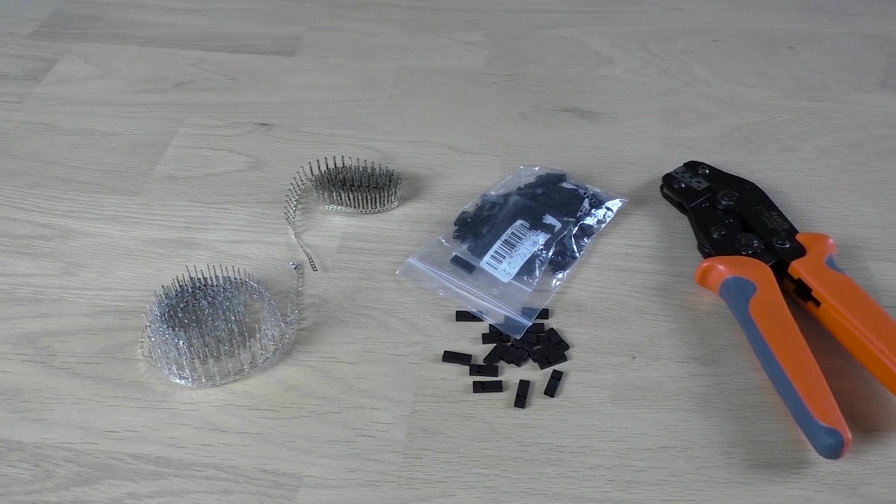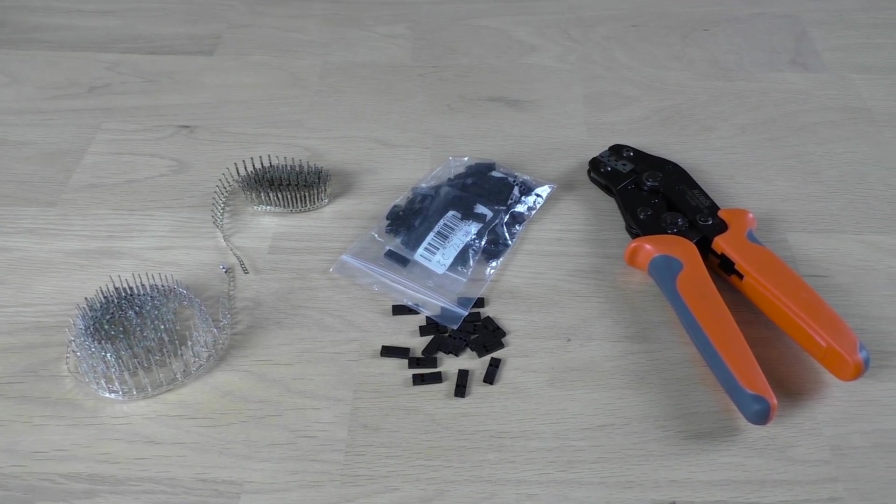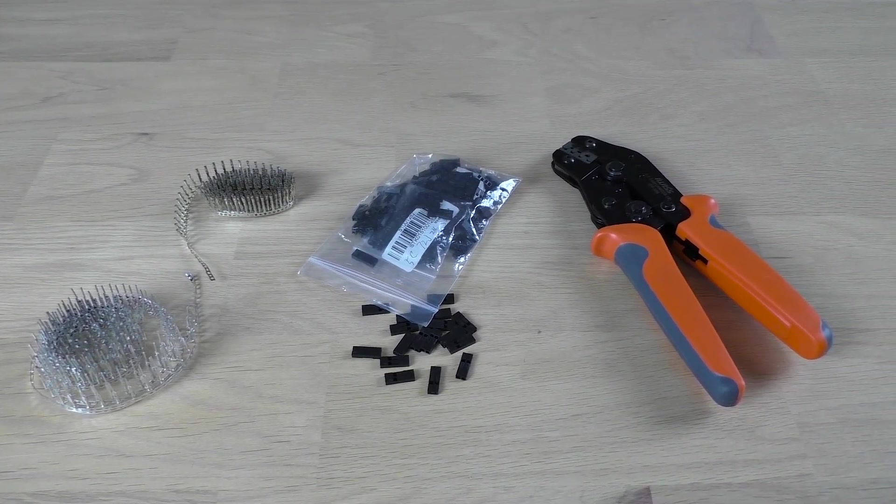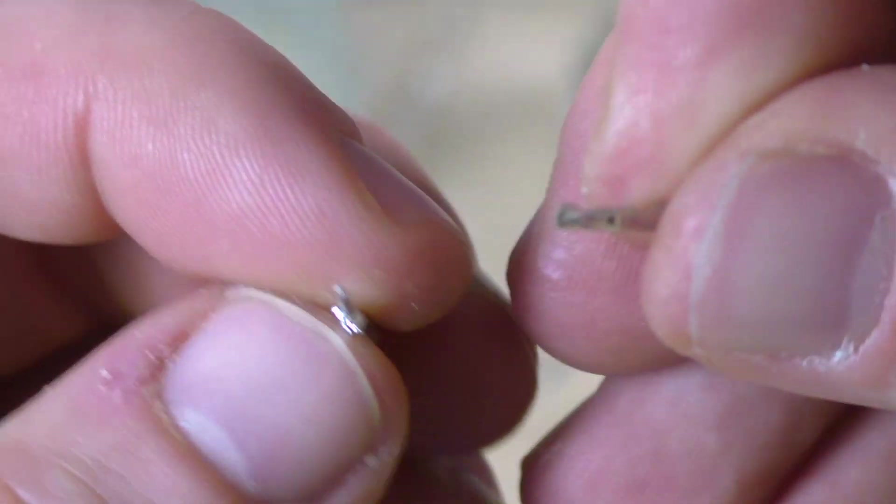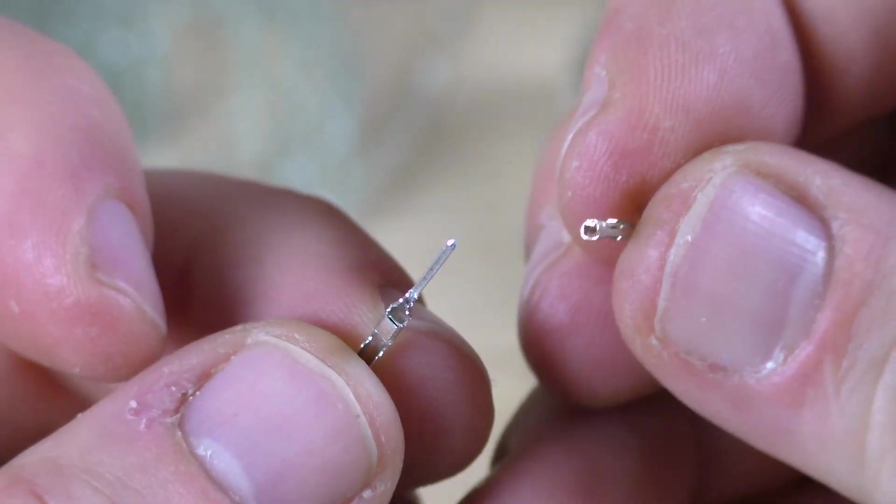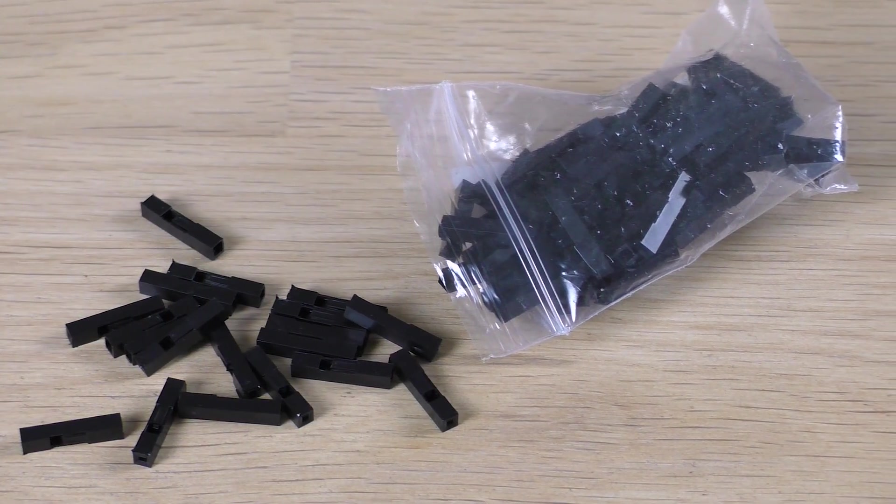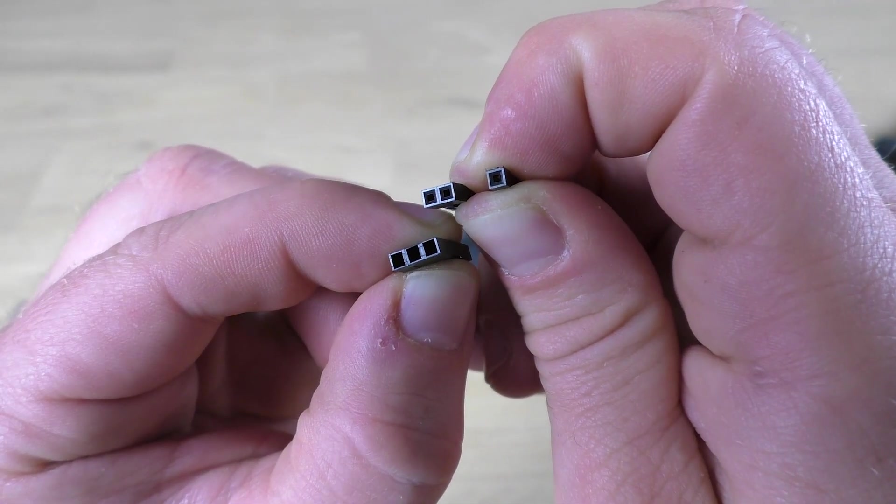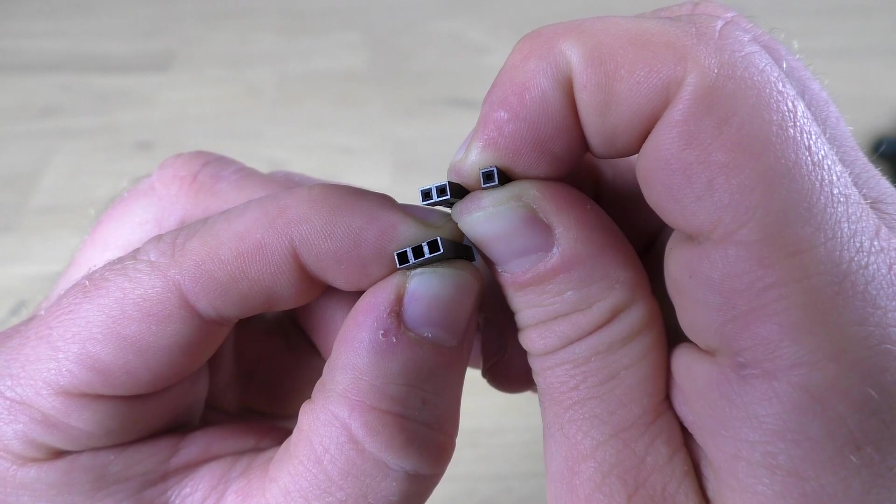If you think you'll need to replace parts in the future, you can't go wrong with the DuPont connector. They are more difficult to assemble, but they allow you to easily disconnect the wires in the future. You will need to buy both male and female connectors, as well as the plastic cases. The housings come with different number of slots, which makes it easy to connect multiple wires at once.